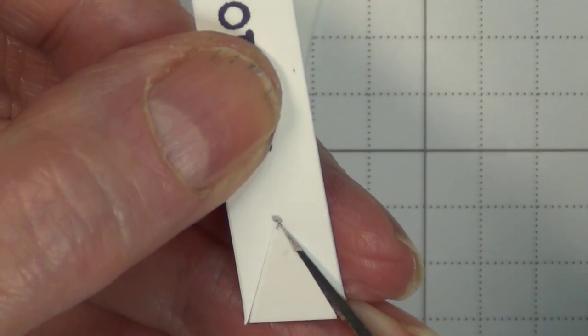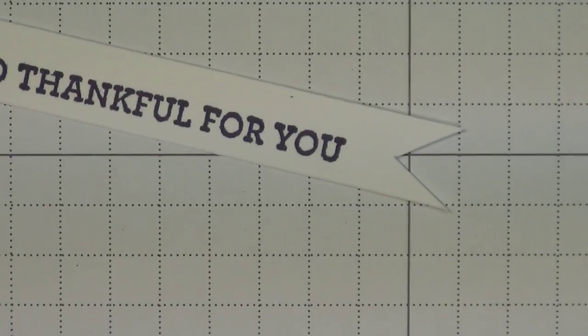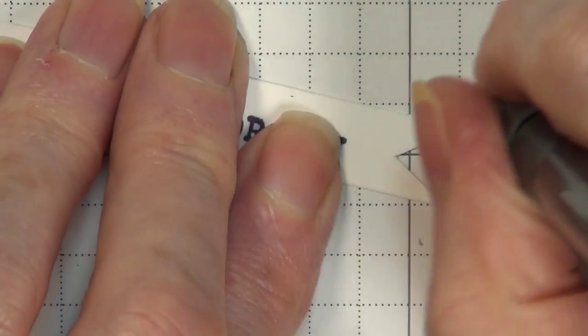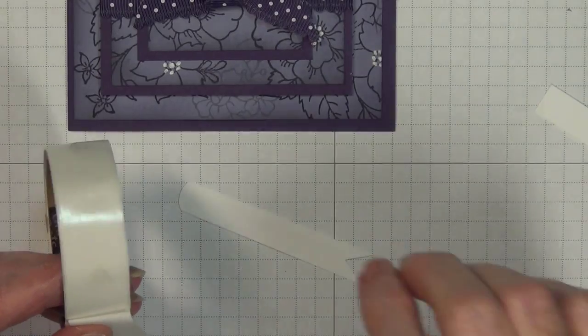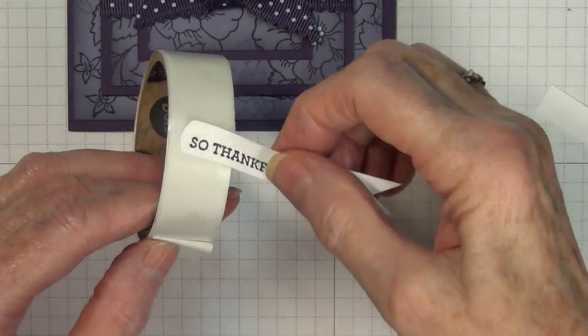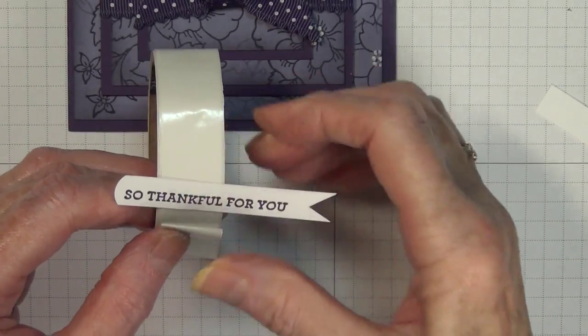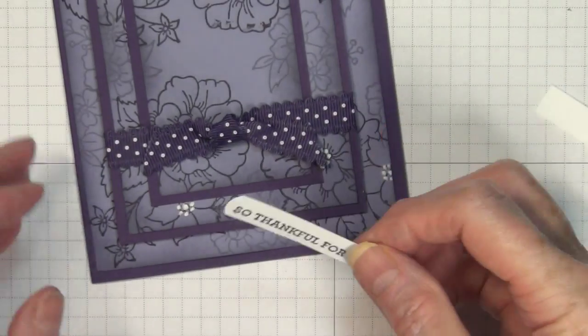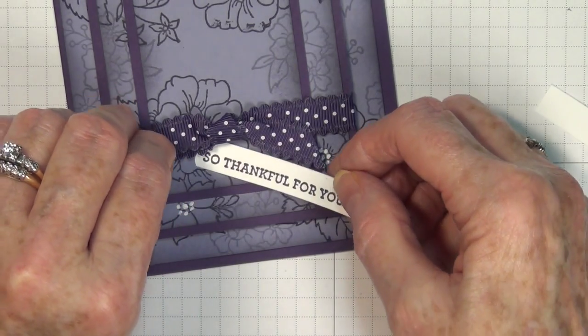To erase this, do not use your regular pencil but use an artist or white eraser for that. Two glue dots is all it takes to hold that in place because you want the end of your banner to be loose. Just push that under there and we have our card finished.